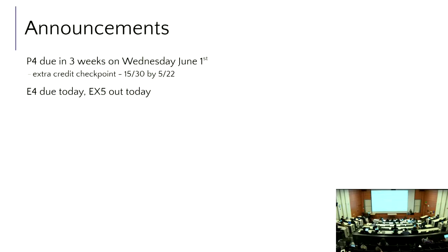Announcements: Exercise 4 is due today, Exercise 5 goes out today, P3 is due on Wednesday of week 10 and has an extra credit checkpoint — the first time we've done it this quarter. If you're officially at 50% of the points at the halfway mark, you get the equivalent of three poll-everywhere extra credit points. This is really just us saying please start early — it will be very unfun the last week of the quarter if you haven't done a lot of work, especially with Dijkstra's.